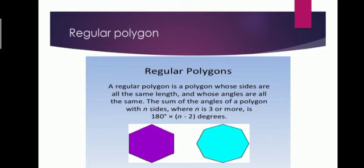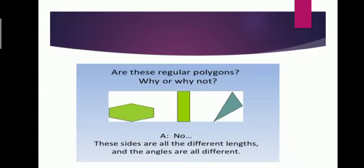The sum of the angles of a polygon with n sides — where n is the number of sides — the formula is: the sum of the angles of a polygon with n sides is equal to 180 multiplied by (n minus 2) degrees.